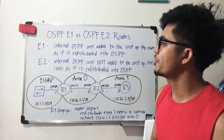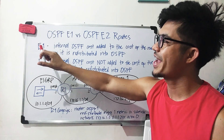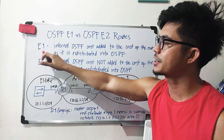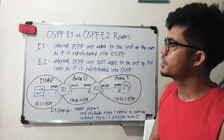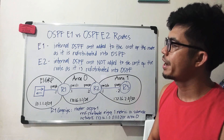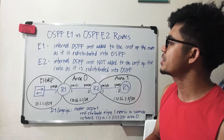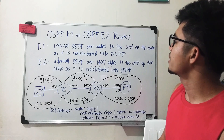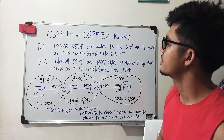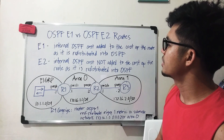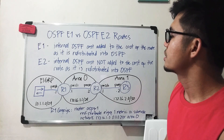E1 is short for OSPF External Type 1. It is an OSPF External Type 1 route in which the internal OSPF cost is added to the cost of the route as the route is redistributed into OSPF.